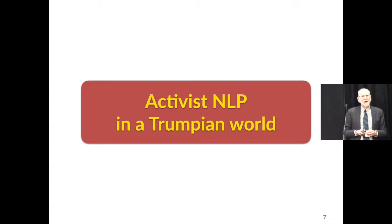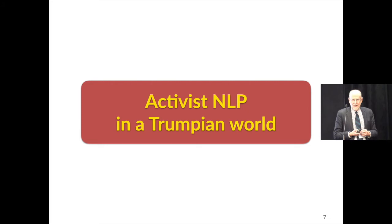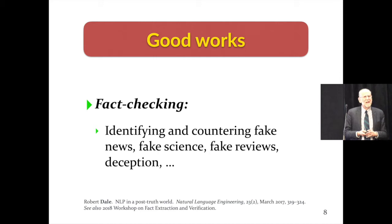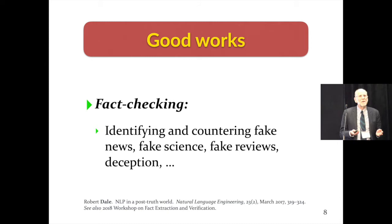So, what can we do to be the anti-Robert Mercer and use NLP to promote better causes in the world? Firstly, countering some of this stuff: identifying fake news, fake science, fake reviews, and so on. This is a topic that's been on the agenda of researchers in natural language processing for a number of years now, mostly under the heading of detecting fake reviews on Amazon rather than fake news. But there are now workshops dedicated to it, and for Facebook and Google in the last year it's become a corporate imperative.